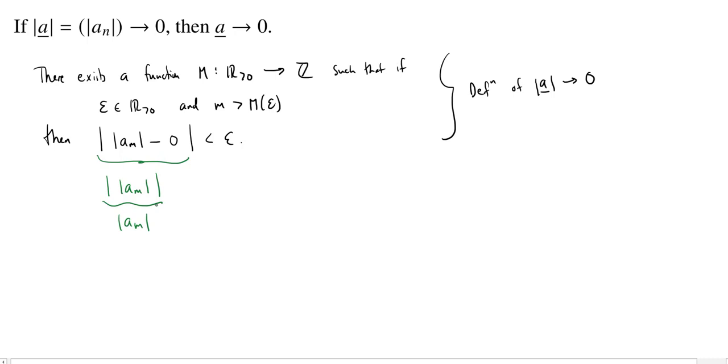And so what we conclude is that if we have this function m and we choose some epsilon and we go out past the eventually number m of epsilon, then actually the absolute value of a_m is less than epsilon.